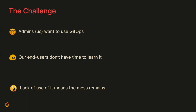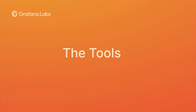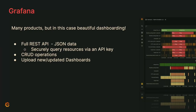So we're going to GitOps it all. We're going to use some fairly standard tools. First is Grafana itself — it has a full REST API that acts with JSON data. It allows you to upload dashboards, upload data sources, and pretty much do whatever you want with any resources Grafana supports. In this particular case we're going to use it to upload and download dashboards from one Grafana instance and upload them into our production instance, where they'll be locked so people can't muck around with them.